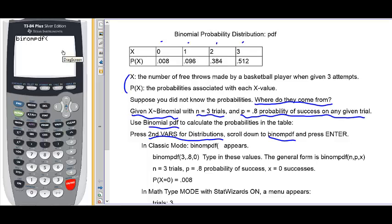And at the moment we're operating in classic mode. So, the open parenthesis appears. We need to type in three, comma, point eight, comma. And then to find the probability that x equals zero, we'll type zero and close the parenthesis and press enter. And there we've got it. The probability that x equals zero is .008.